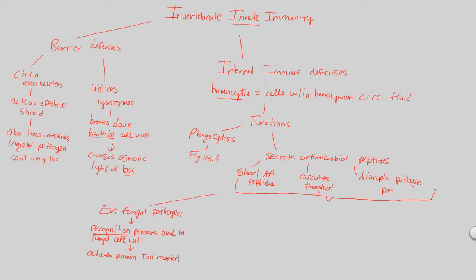Hemocytes, circulating throughout the insect's body in the hemolymph, have this Toll receptor. Once the Toll receptor is activated upon recognition of a foreign invader — in this case, a fungal cell wall — this results in a signal transduction to the nucleus. A message is sent to the nucleus, which then transcribes the appropriate genes, and ribosomes translate whatever the nucleus directs.